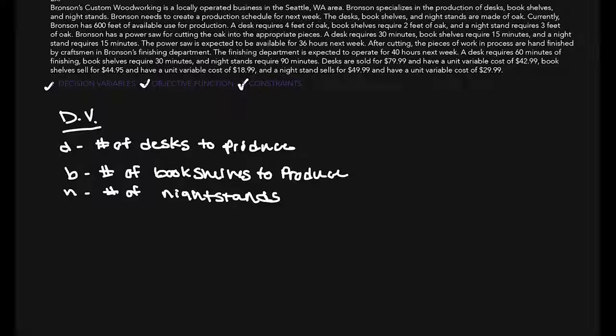Desks are sold for $79.99 and have a unit variable cost of $42.99. So, revenue of nearly $80 and a unit variable cost of $43. If we subtract that, we would have $79.99 minus $42.99. We have $37. So, when we're looking at the objective function, we are looking to maximize profit.